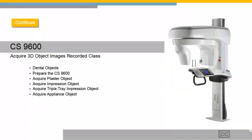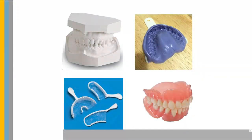CS9600 Acquire 3D Object Images recorded class. This recorded class is designed for all team members. It provides instruction on acquiring 3D object images using the CS9600 unit. The 3D dental objects covered are plaster models, impressions, triple tray impressions, and appliances.